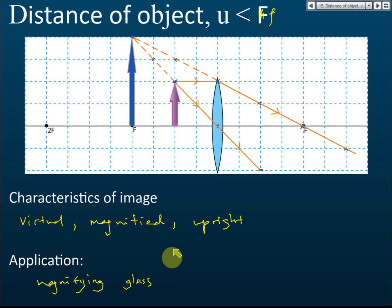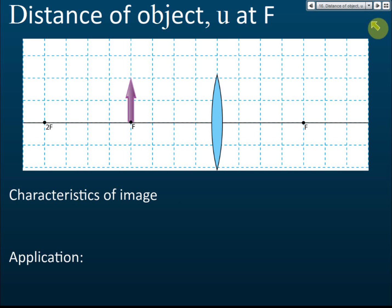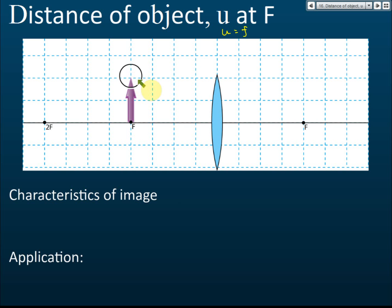This type of image is used in a magnifying glass. Now let's proceed to the second case. In the second case, the object is placed at u equal to f — the object distance equals the focal length, or the object is placed exactly at the principal focus. Applying rule number one: if the light ray passes through the optical center, it is not refracted.